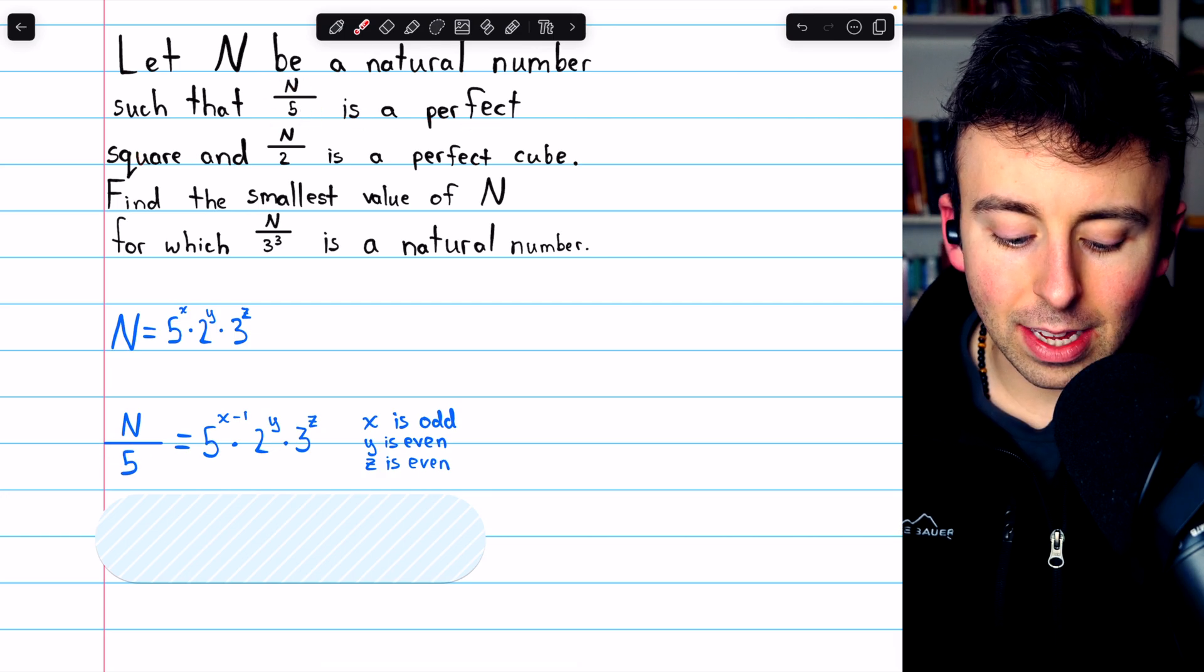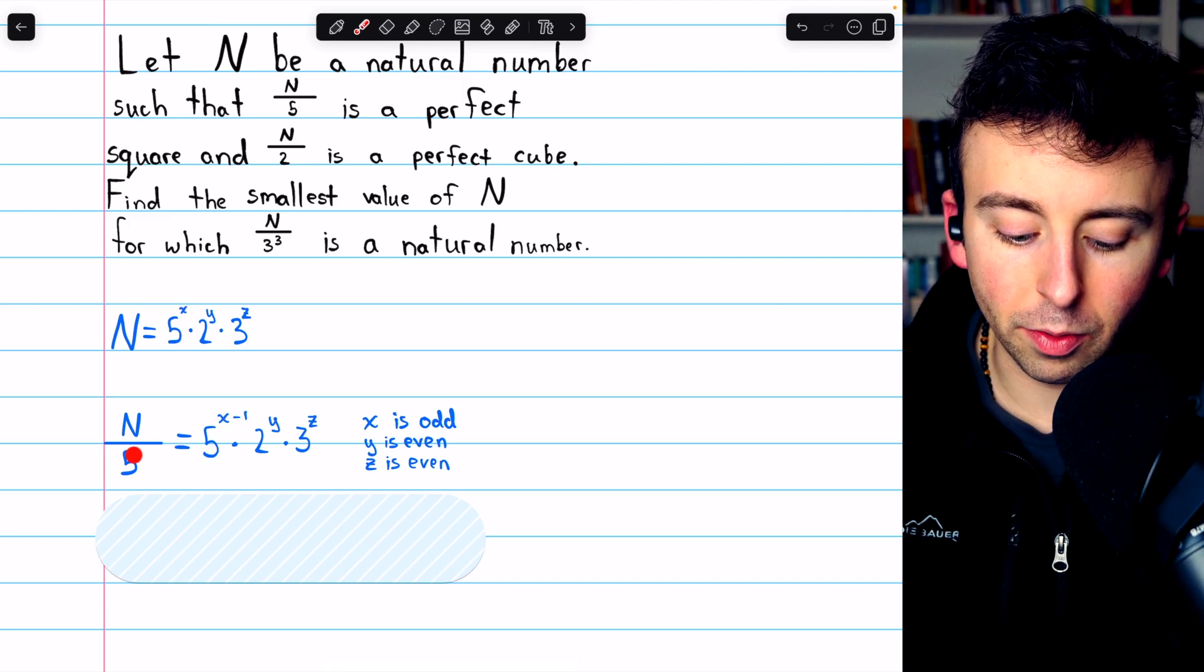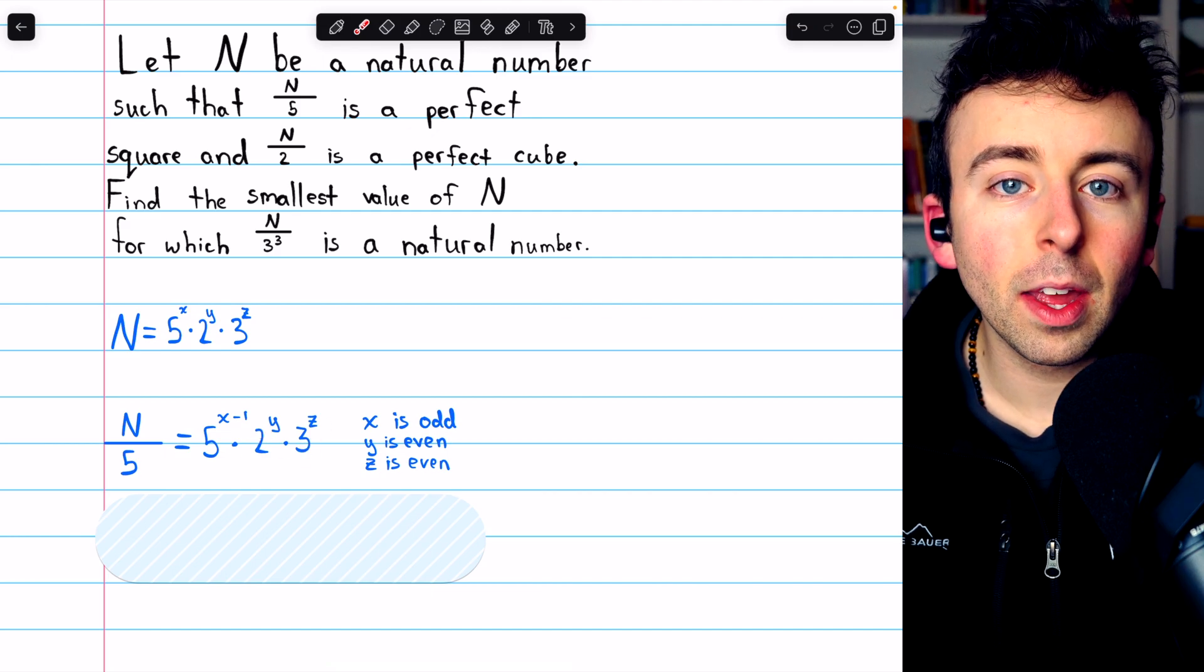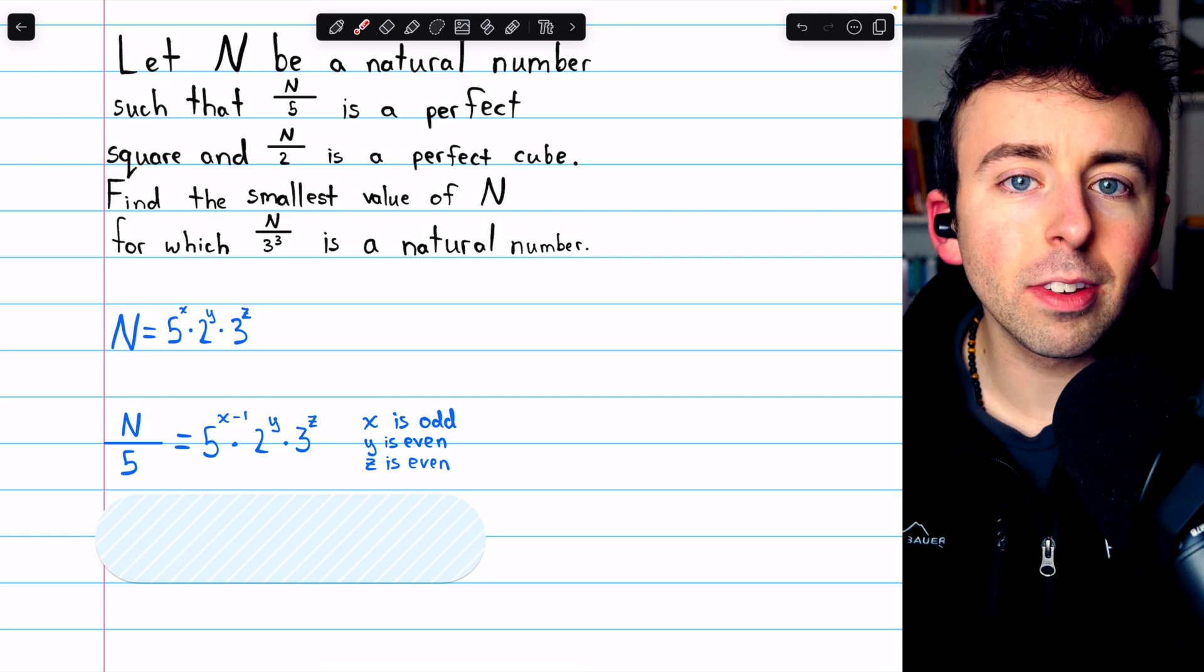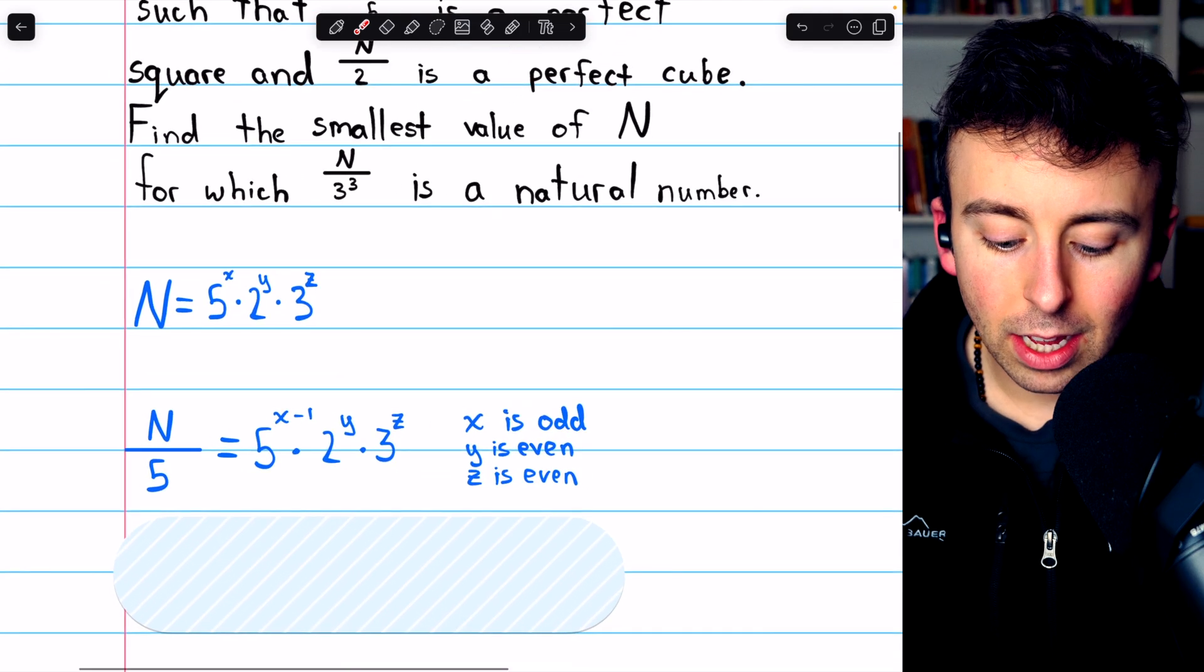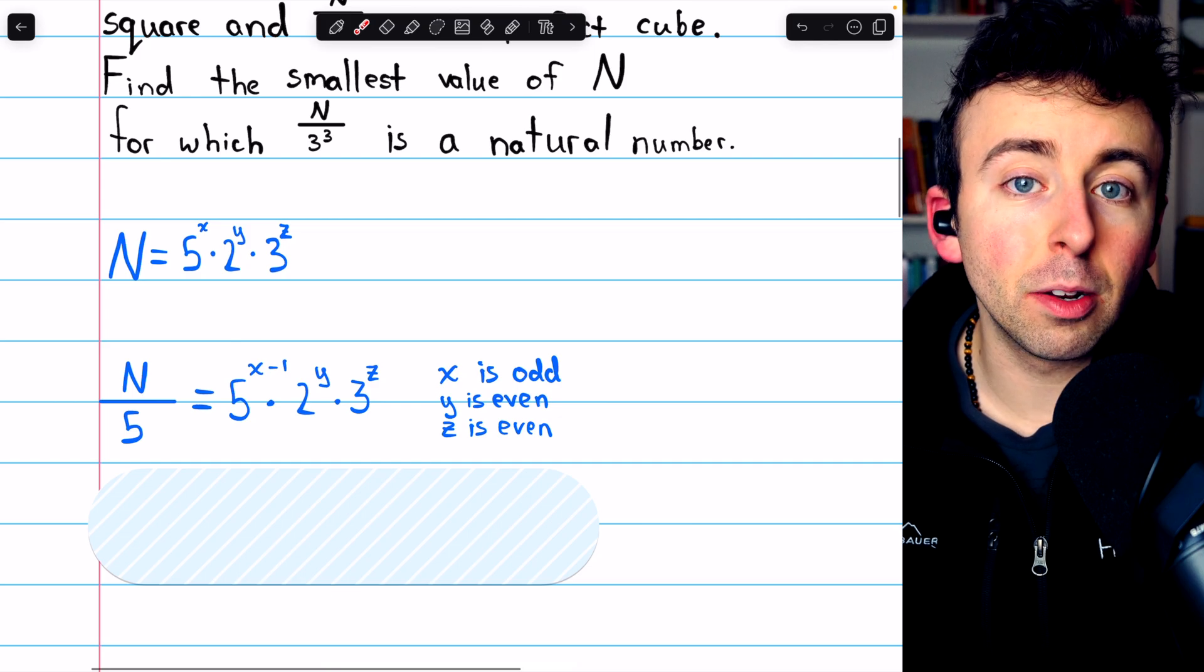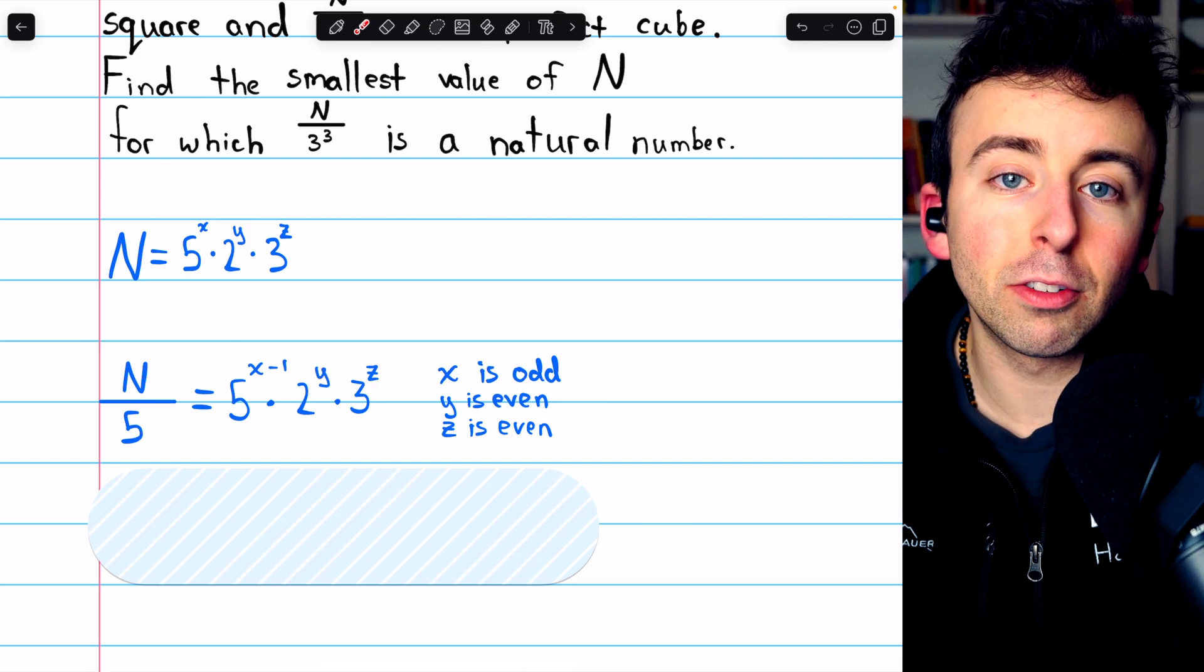N over 5 is equal to 5 to the x minus 1, x minus 1 because we're dividing by 5, times 2 to the y times 3 to the z. Now, this must be a perfect square, which means all of its powers must be even. So, x minus 1 must be even, which means x has to be odd. y must be even, and z must be even.